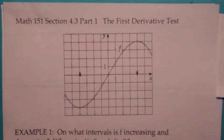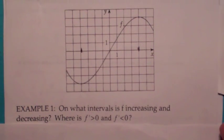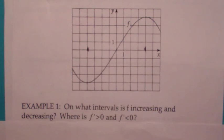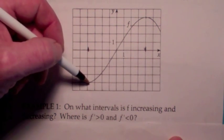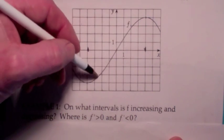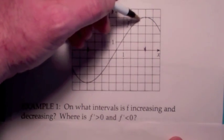Let's start off by looking at this example. You're given a function, and the question is: on what intervals is f increasing and decreasing? And also, where is f' greater than 0 and f' less than 0? Notice we're really asking the same question, because f is increasing from negative 4 to 4 — as x goes from negative 4 to 4 the function is increasing. The slopes of the tangent lines at any point will be positive in that region.